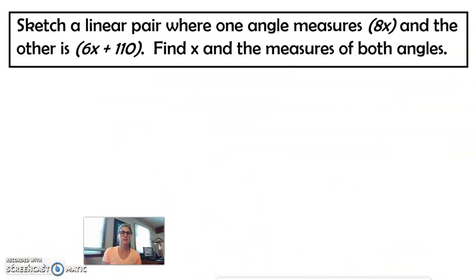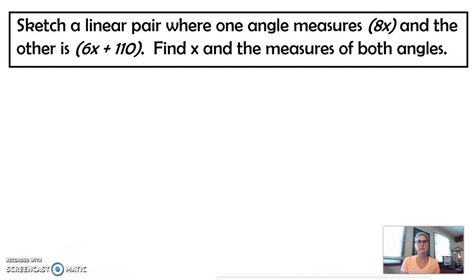This one, why don't you pause the video and see if you can do this. You're going to sketch a linear pair, so know what a linear pair looks like. Make that sketch where one angle measures 8X and the other is 6X plus 110. Find X and the measures of both angles.